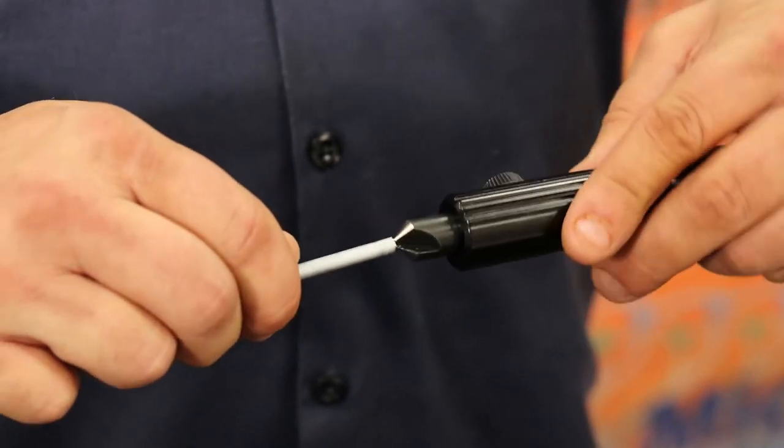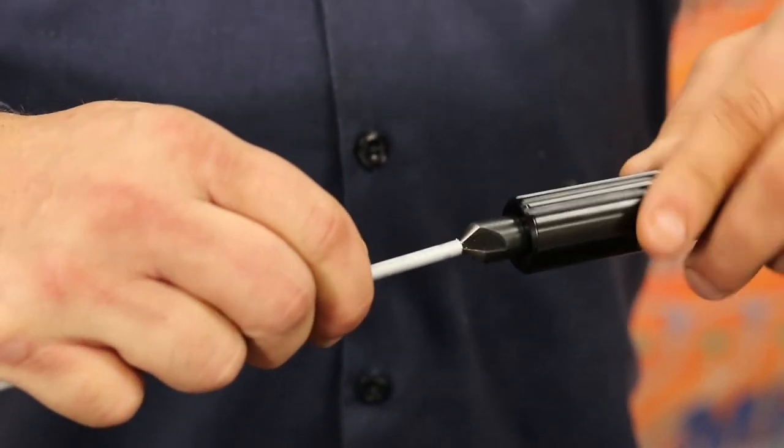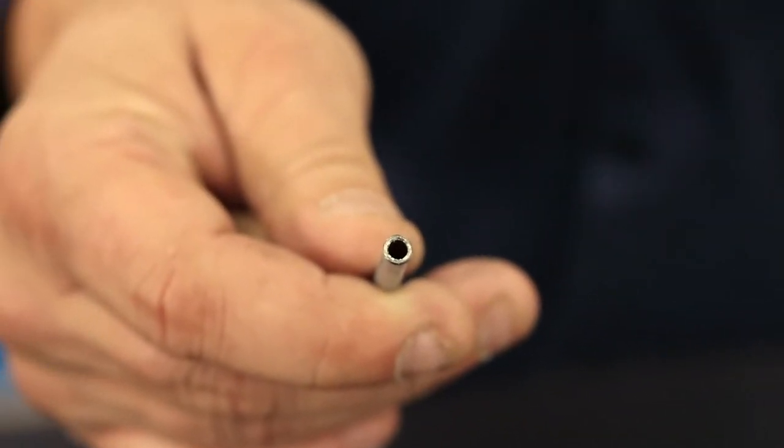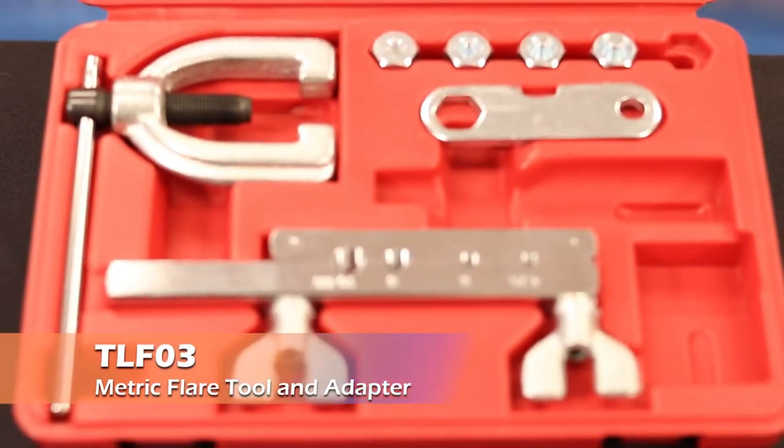Now flip the tool around with the chamfer bit extended and clean any leftover burring on the inside. Now that your tubing is prepped, you will need your TLF-03 metric flare kit and adapter.